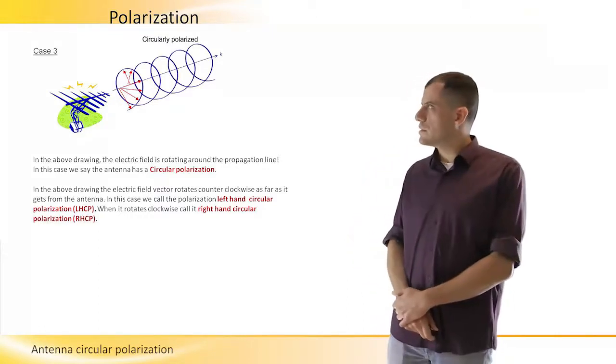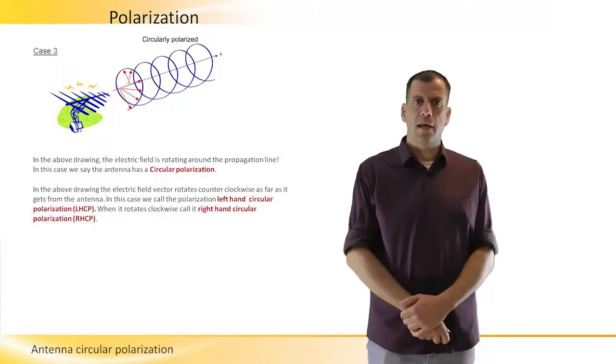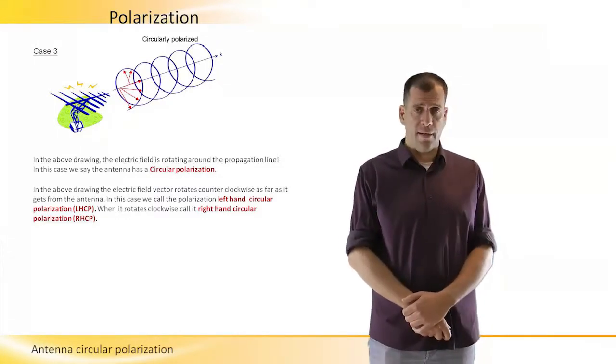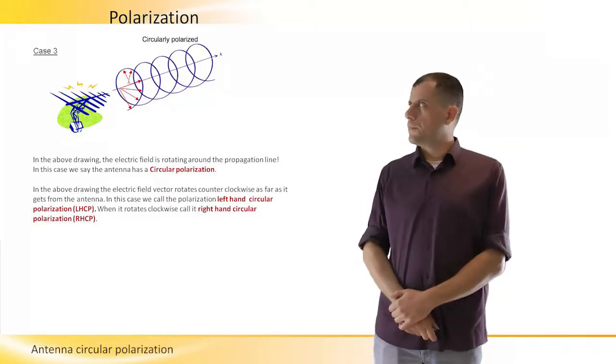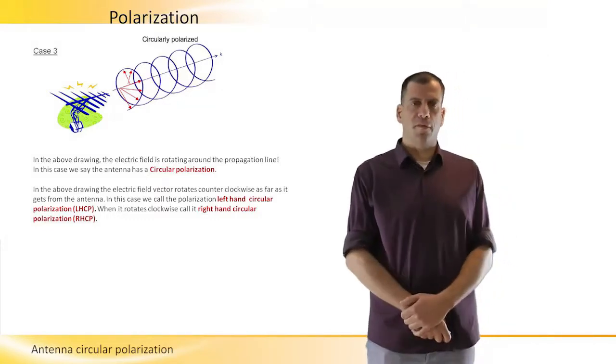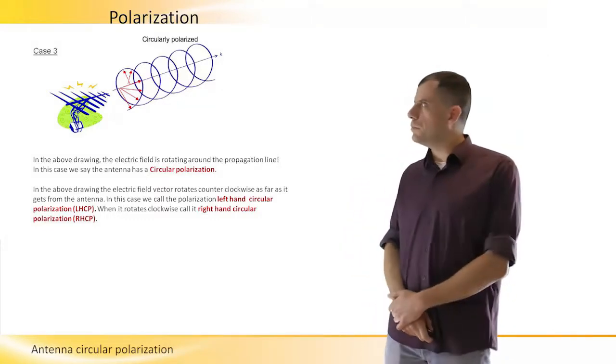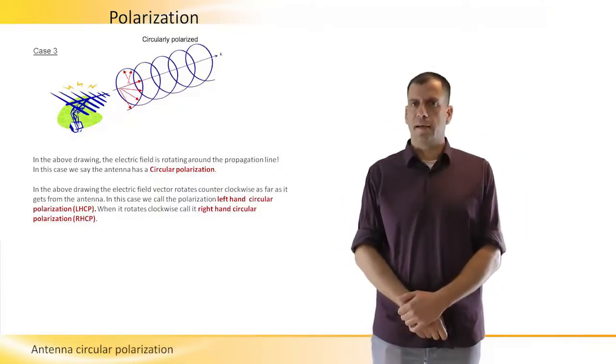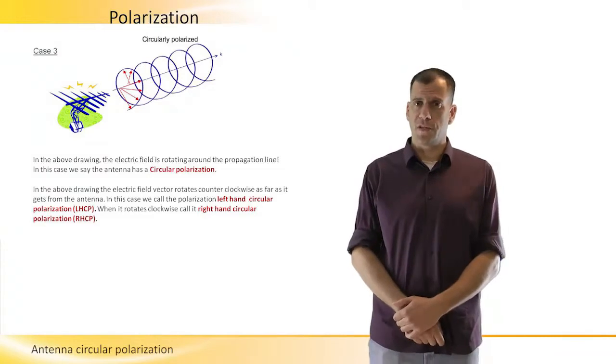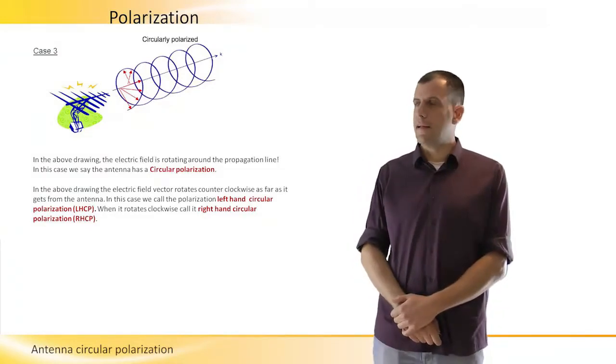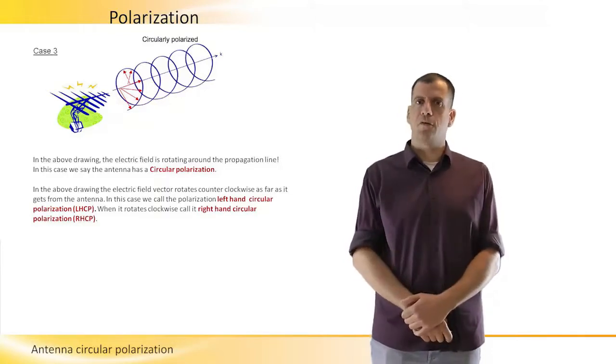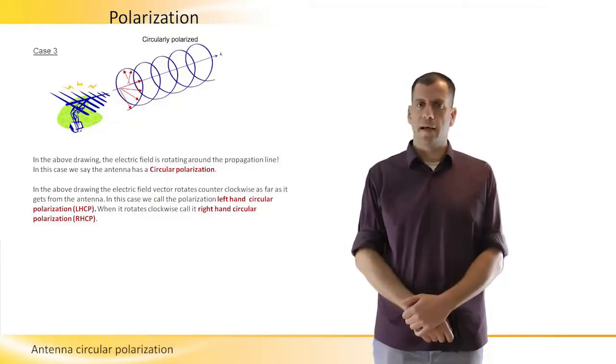How do we achieve circular polarization? If we generate from our antenna two linear polarizations, one would be vertical and the other would be horizontal, and we make sure that the horizontal polarization will have a delay of 90 degrees in its phase compared to the vertical polarization, and they will have the same amplitude.